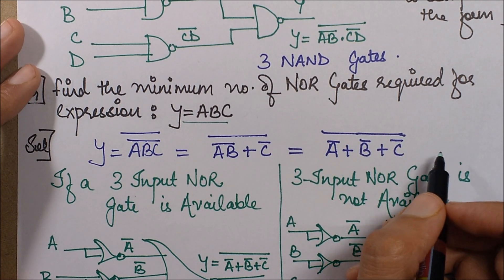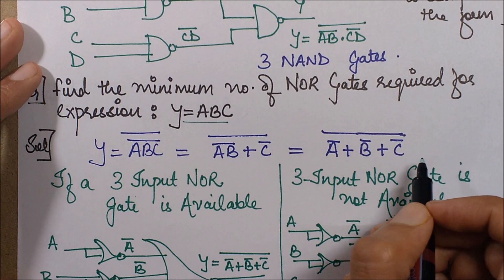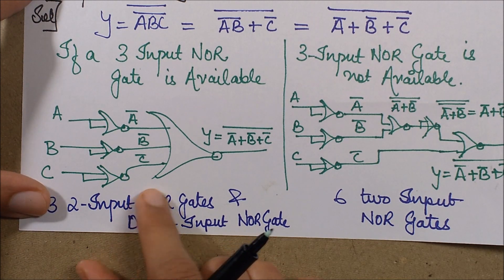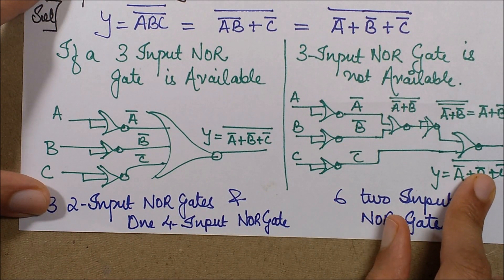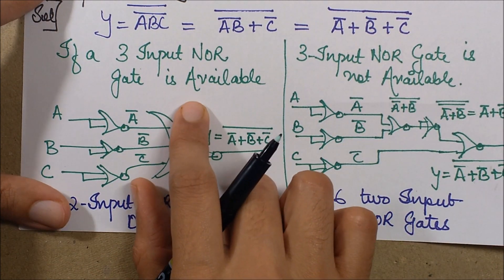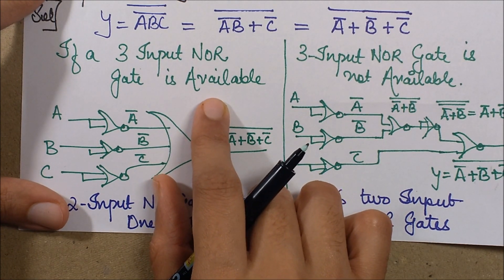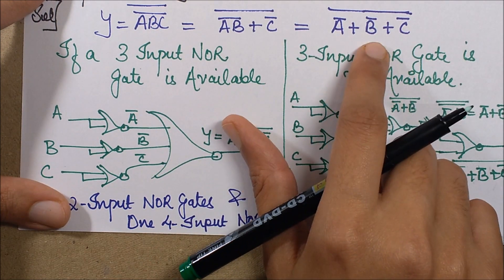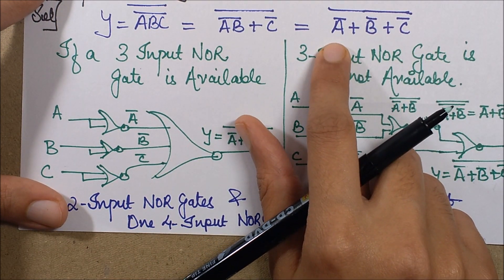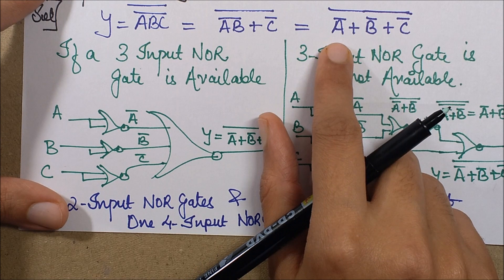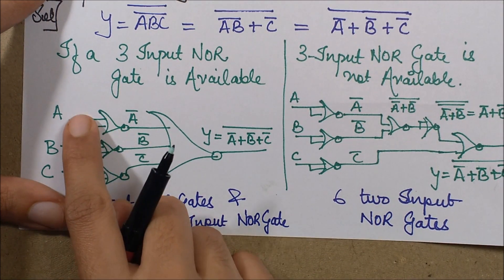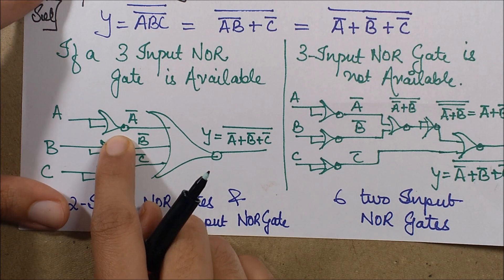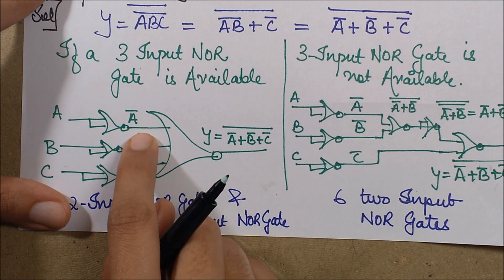Now in this case, if you have a three-input NOR gate available, you can directly form the circuit as this. Otherwise, you'll have to do it in steps. So in case I have a directly available three-input NOR gate, what I do is I just formulate these things. Now when I need A bar, how will I obtain A bar? I'll just give the same input line to both inputs of this NOR gate and it will yield A bar.